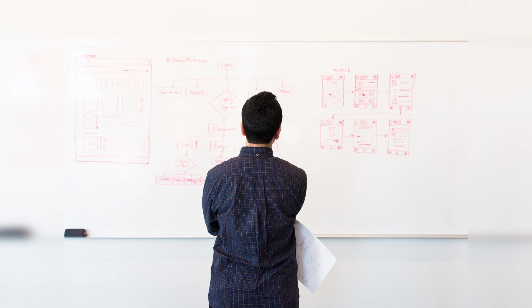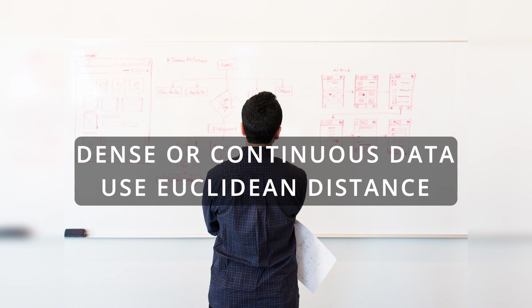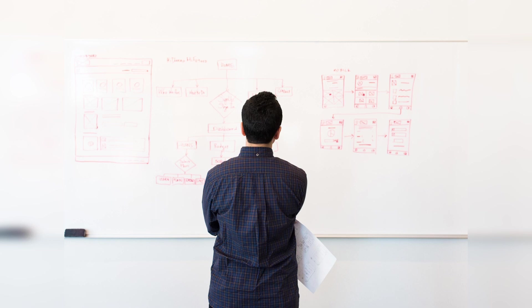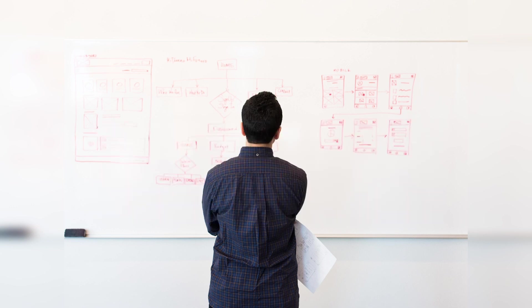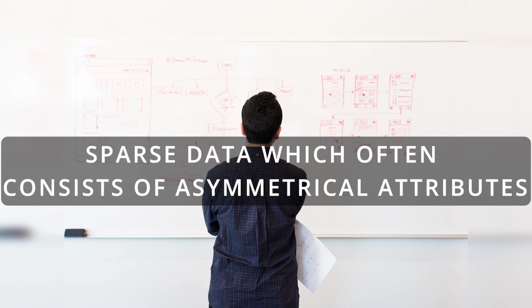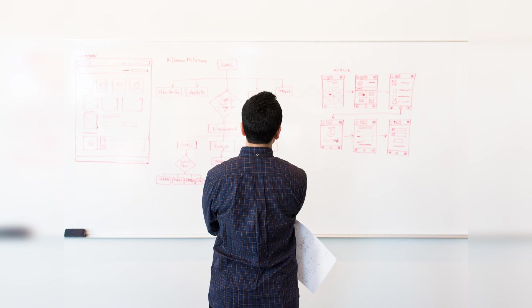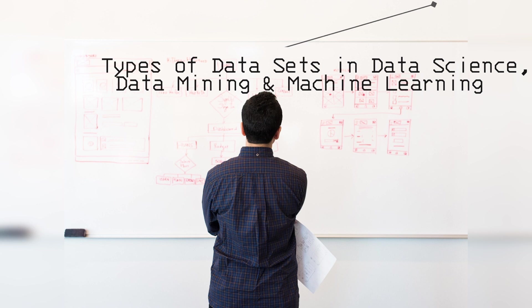There is no universal answer — it's based on the problem you are trying to solve and the data involved. The proximity measure should fit the type of data. For dense continuous data, metric distance measures such as Euclidean distance are often used. Proximity between continuous attributes is most often expressed in terms of differences, and distance measures provide a well-defined way of combining these differences into an overall proximity measure. For sparse data, which often consists of asymmetric attributes, you typically employ a similarity measure that ignores zero-zero matches.